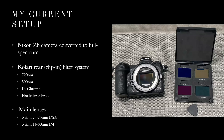My current infrared setup is a Nikon Z6 full spectrum conversion with a set of Kolari magnetic clip-in filters — including 720, 590, their IR Chrome filter, and their hot mirror 'Pro 2' filter. My two main lenses are the Nikon 28-75mm f/2.8, which is one of the best lenses for infrared I've tested, and sometimes the 14-30mm f/4, which is also pretty good, though you can run into some soft corners at the widest settings. Neither produces terrible hotspots.